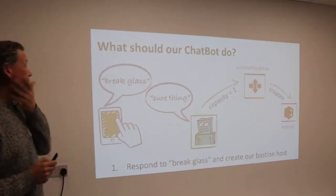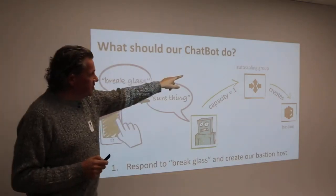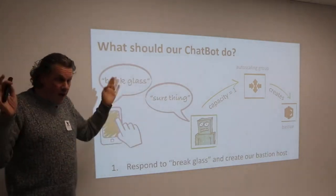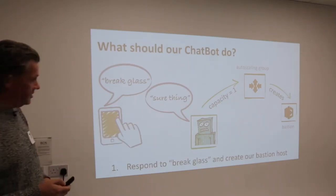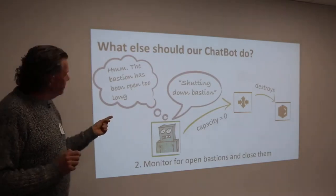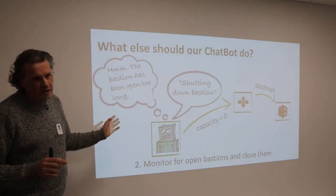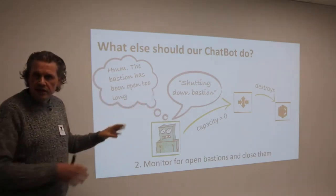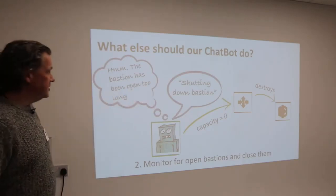What do we want our chatbot to do? We're going to ask it to do the break glass, it's going to set the capacity to one in the auto scaling group, create our bastion host, and we'll be able to SSH into it. It's also fun to make it do something else: it's going to watch, and when the bastion host has been open for too long, it's going to shut it down. I have a very short one-minute timer for today to demonstrate. It will set the capacity to zero, destroy the bastion host, and boot us off the server.